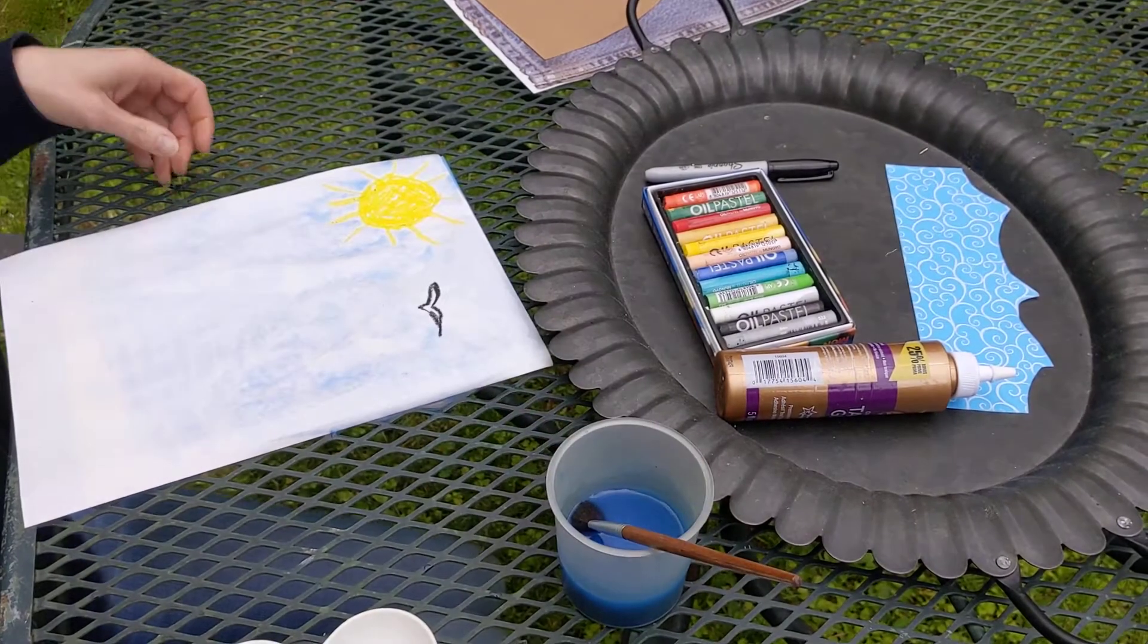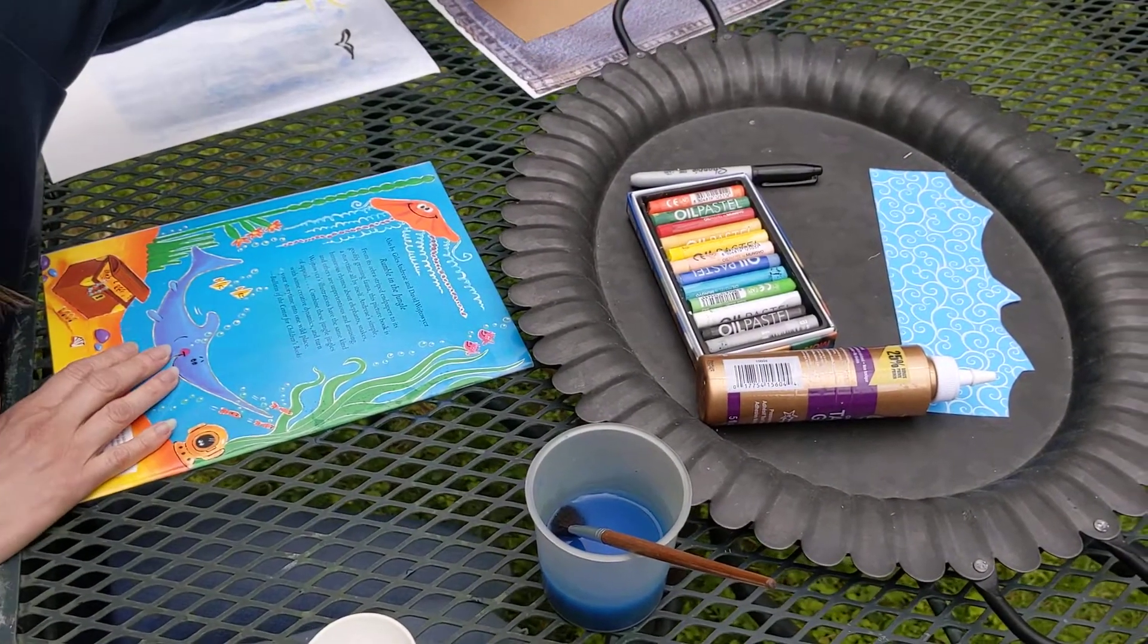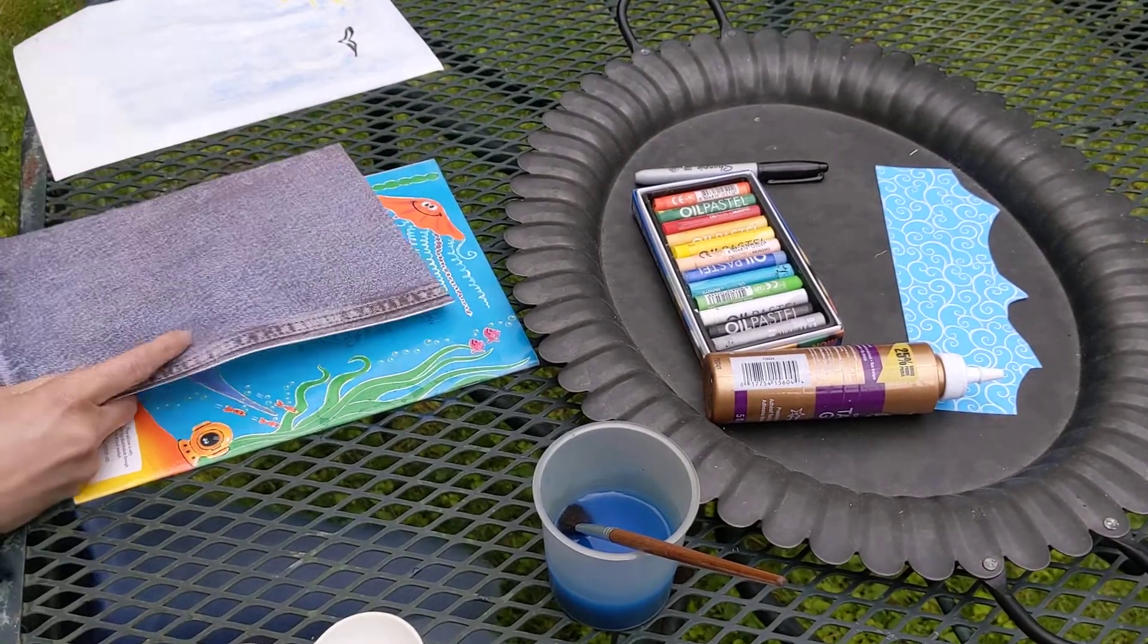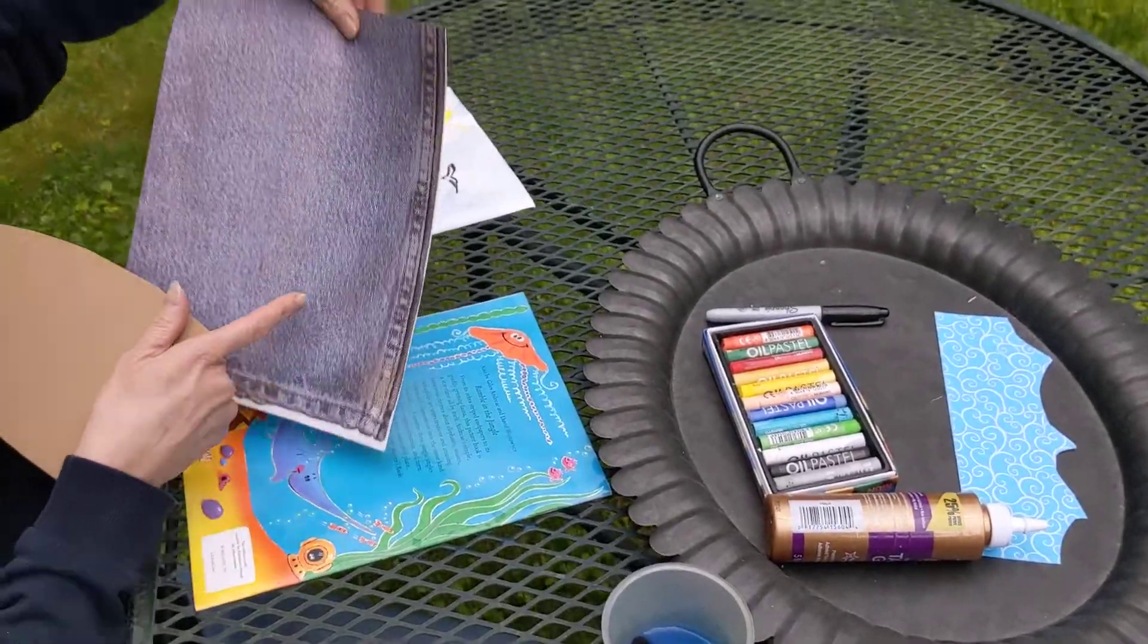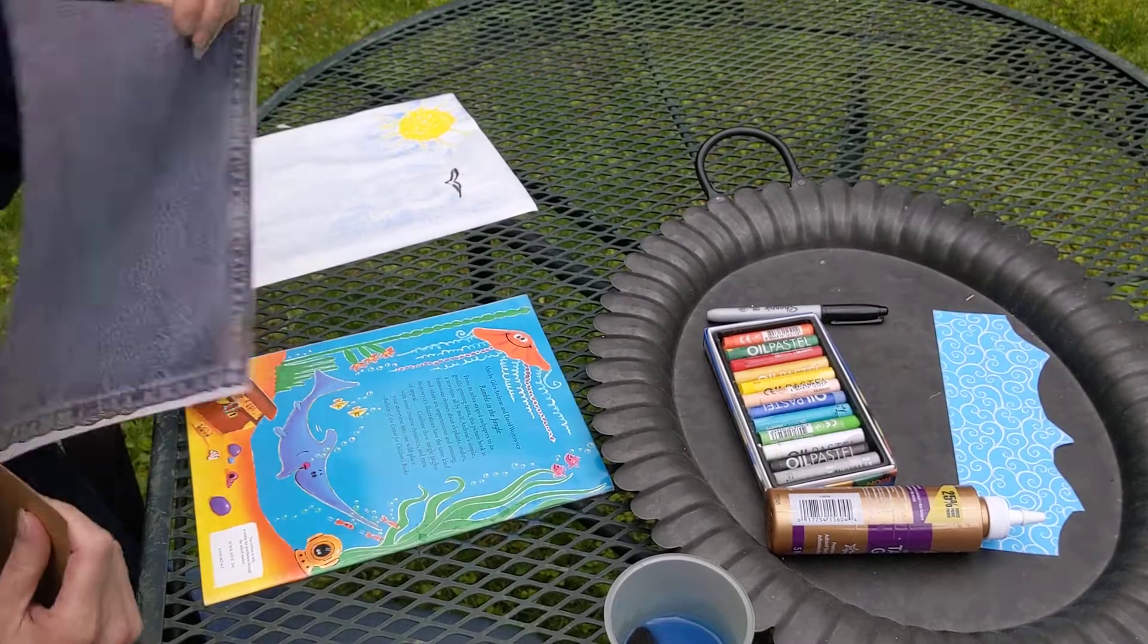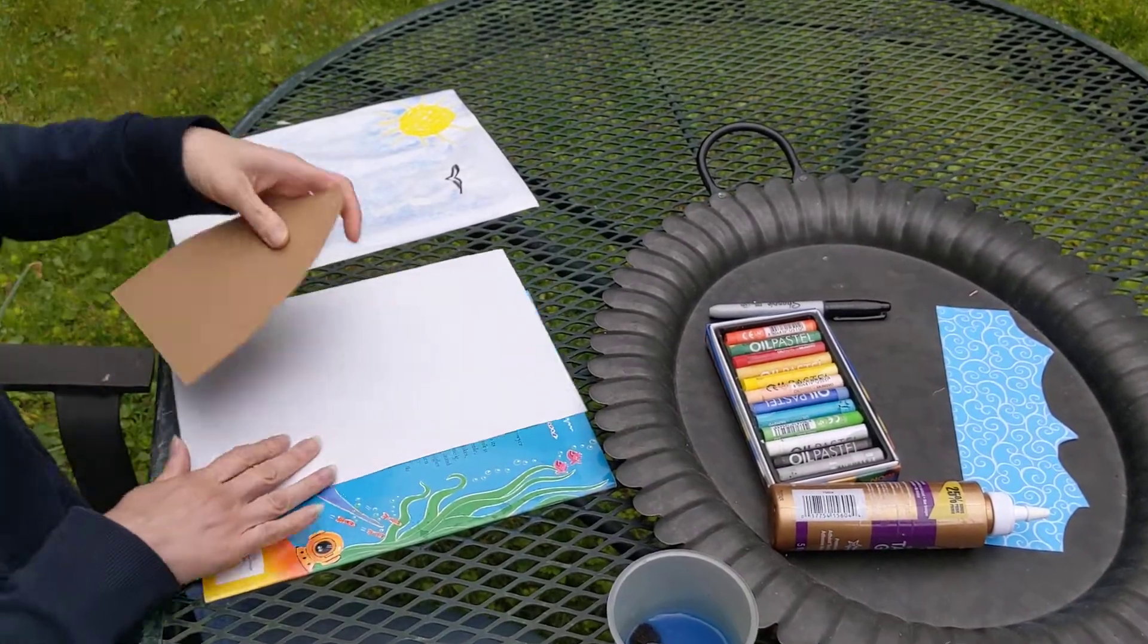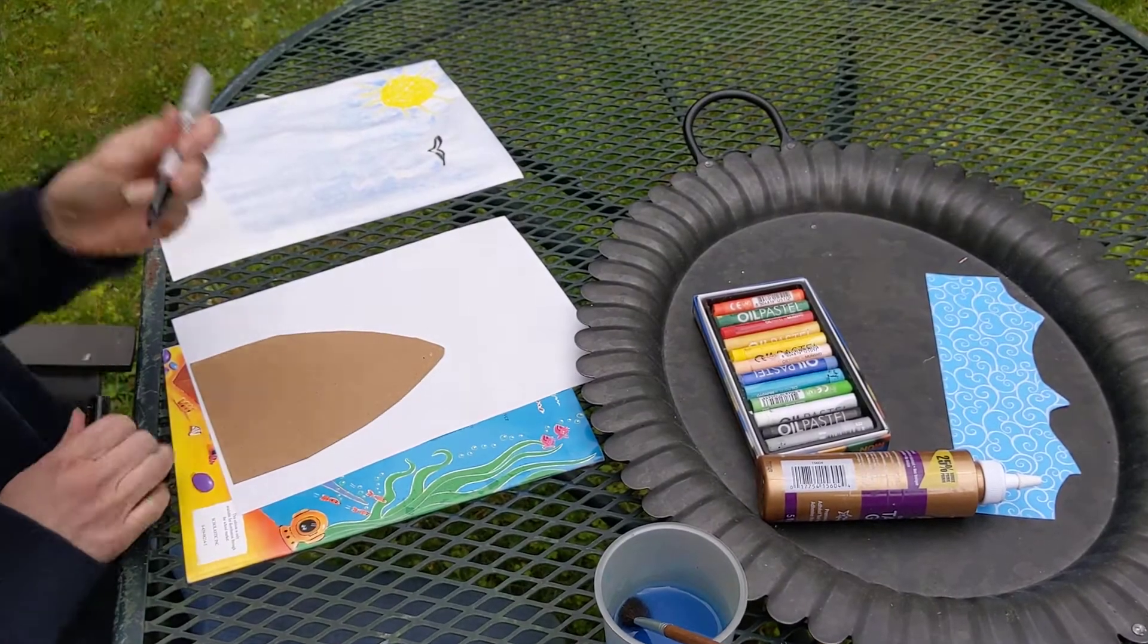Okay, so I'm gonna put that aside for just a second and we're going to make our shark. Got a shark tracer that I already drew, and I found this really cool paper. We're going to turn it over so that you can trace right on the back, and then we'll cut it out.